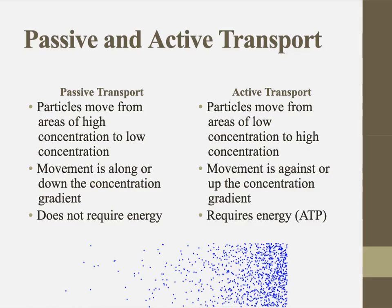In terms of molecular movement, we have two very basic categories: passive transport and active transport. In passive transport, particles are moving from areas of high concentration to areas of low concentration. We often say they're moving down the concentration gradient, going from high to low. This does not require the input of energy.